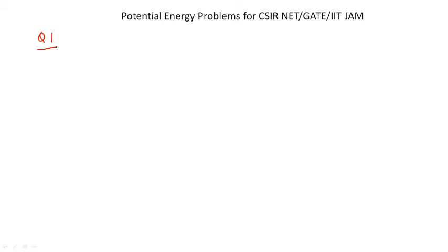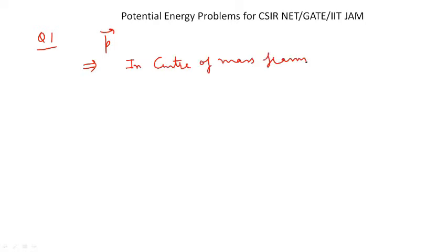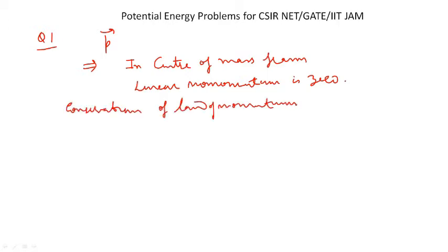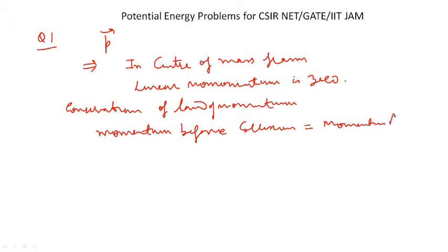The first problem: two particles approach each other with different velocities. After collision, one of them is found to have momentum p in their center of mass frame. In the same reference frame, the other particle must have what momentum?